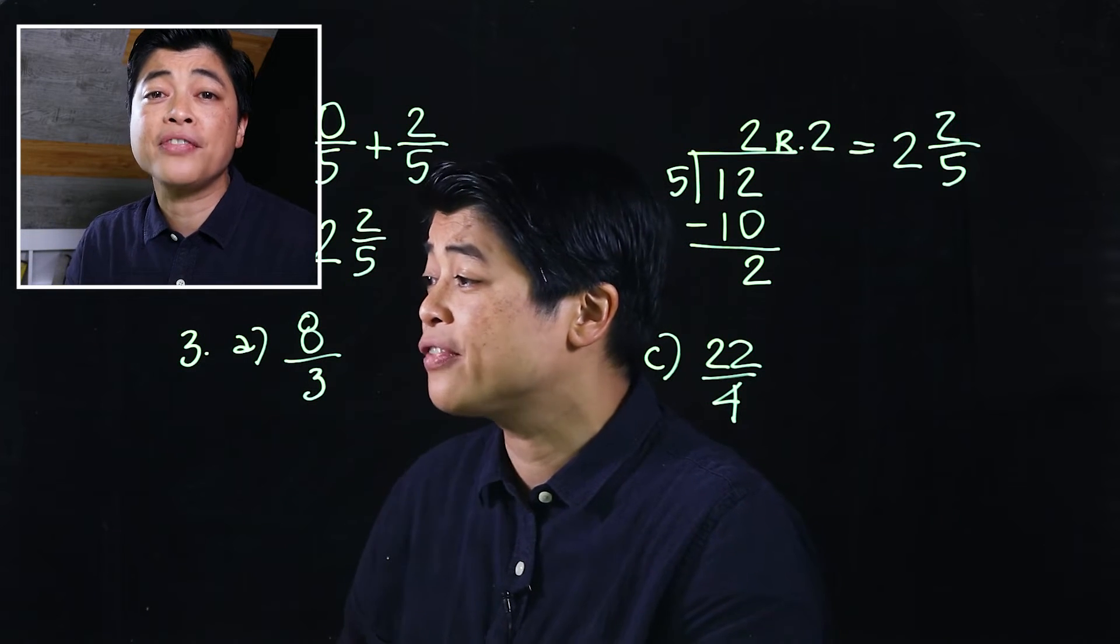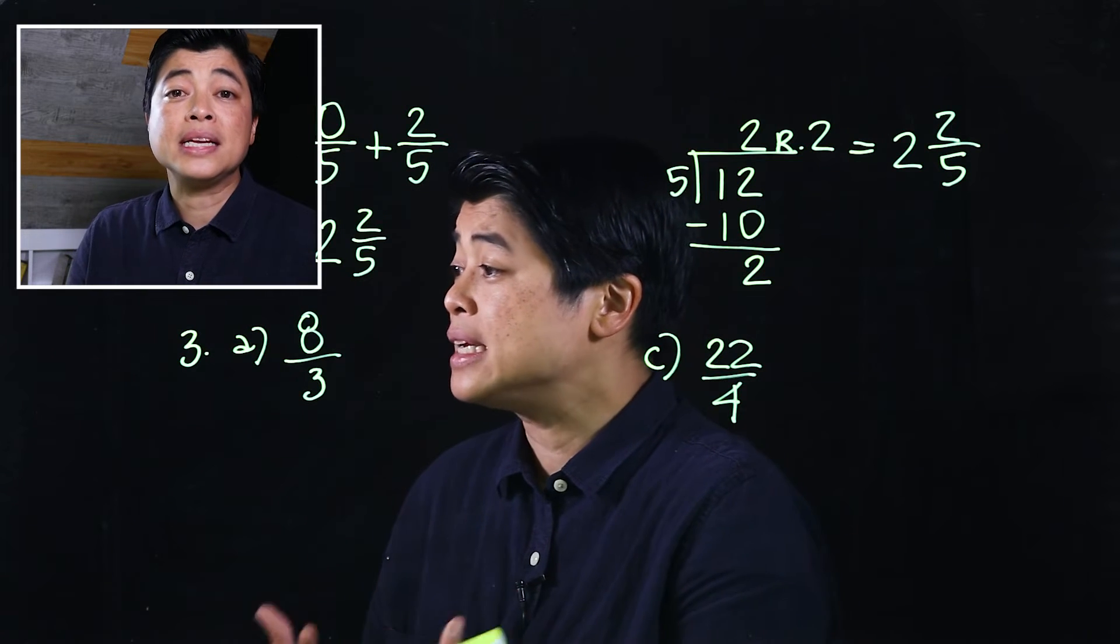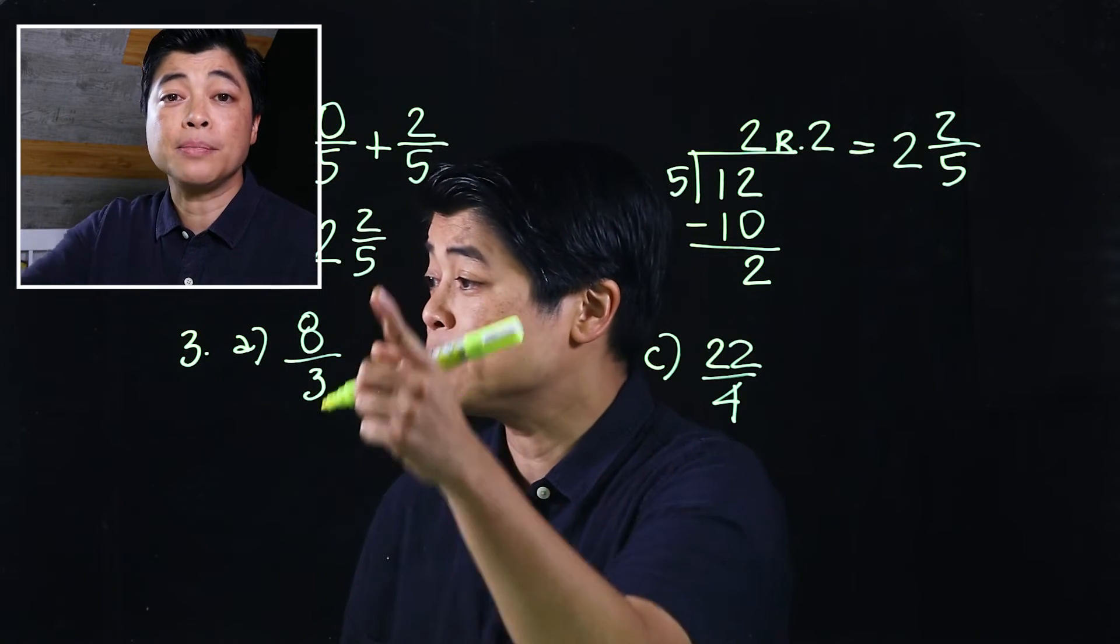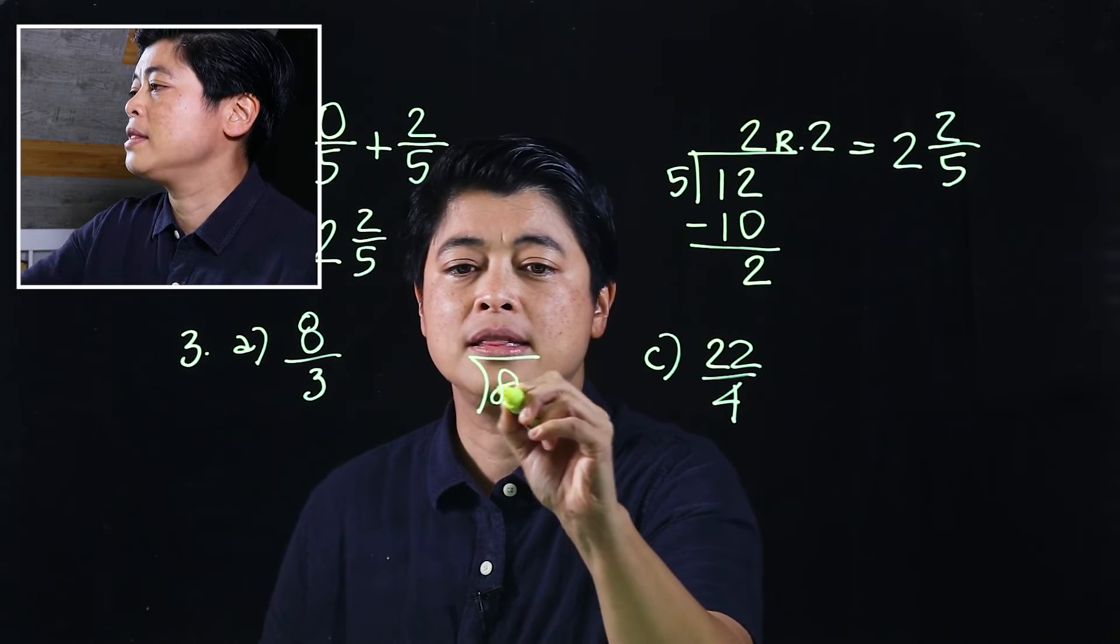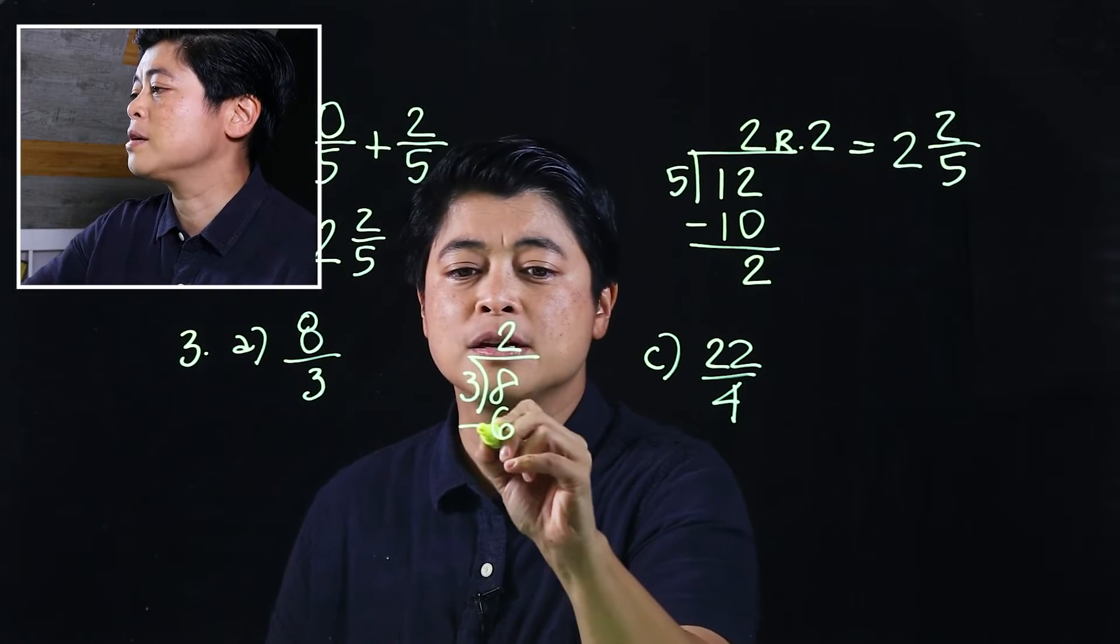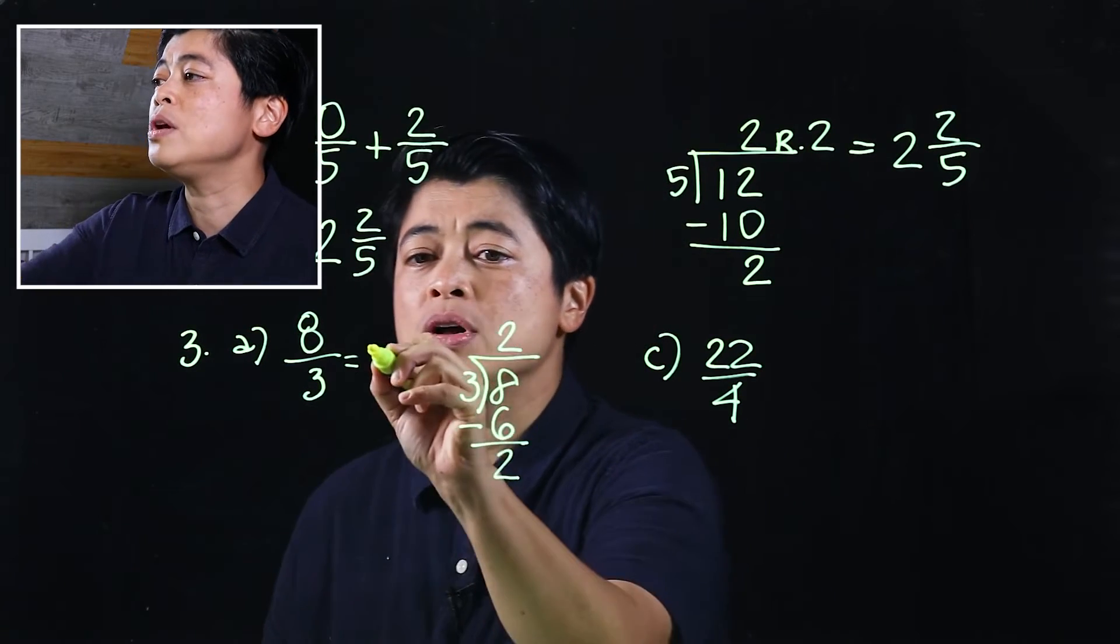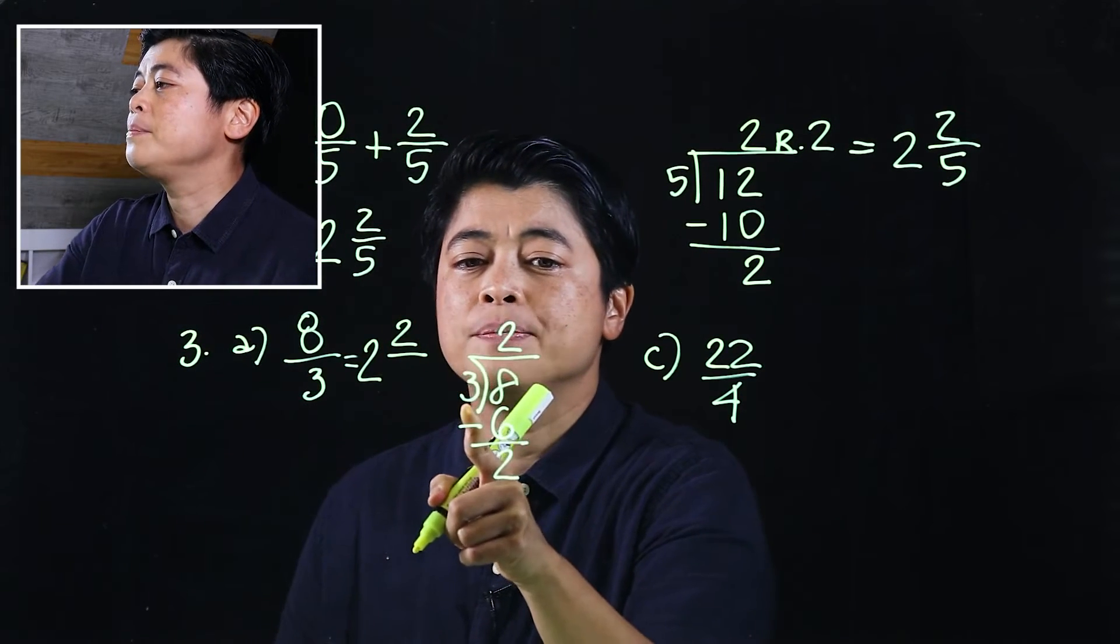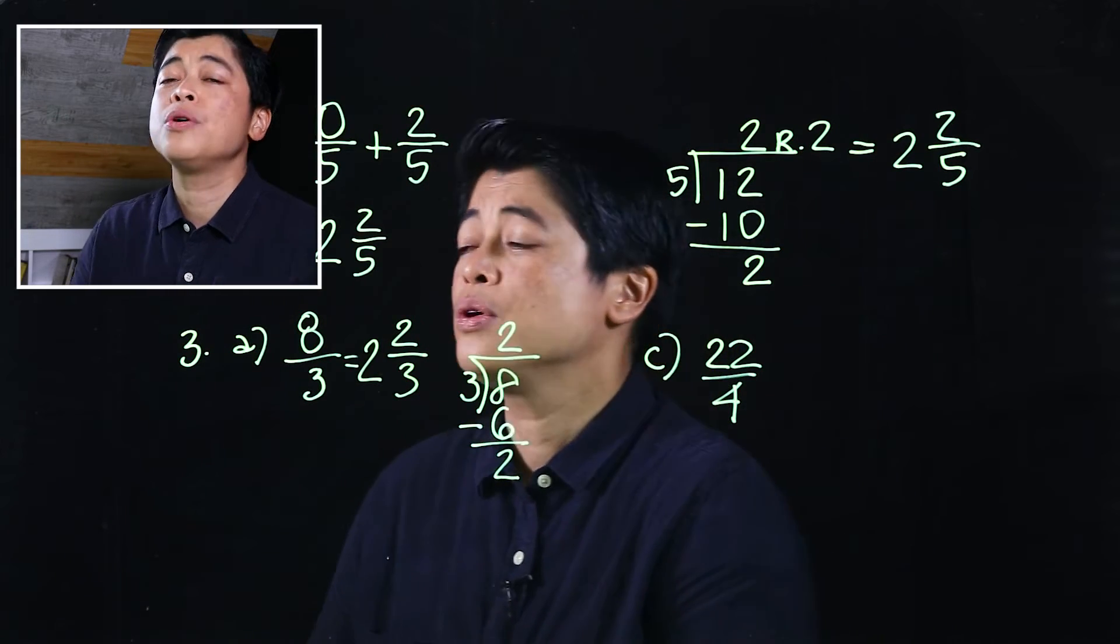That will be letter A. The first thing we want to do is make sure the improper fraction is in simplified form before we divide, just makes it a little bit easier. In this case, 8 over 3 is already in simplified form. I will divide: 8 divided by 3 is 2, multiply that's 6, subtract that's 2, which means we have a remainder of 2. So the whole number is the quotient 2, and this will be 2 over the divisor, so 2 and 2 thirds.